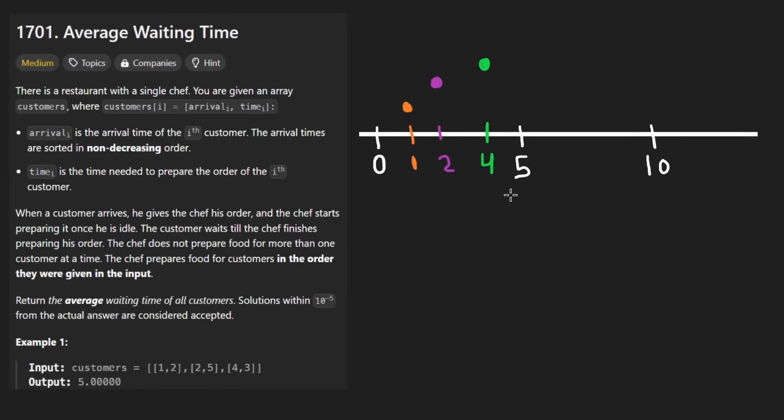So I made a little picture over here. This is time, this axis here. So we have three customers. One customer arrives at time one, one customer arrives at time two, another arrives at time four. And we're given this in the form of a list of pairs. So the first value in each pair is going to be the time that each person arrives.